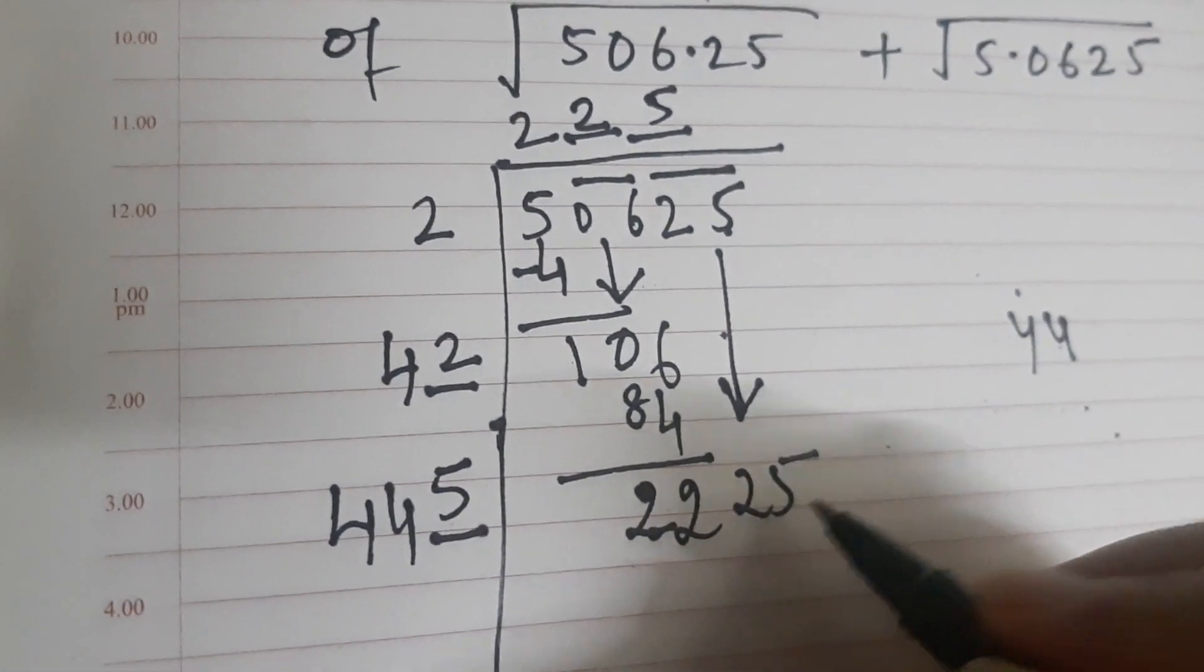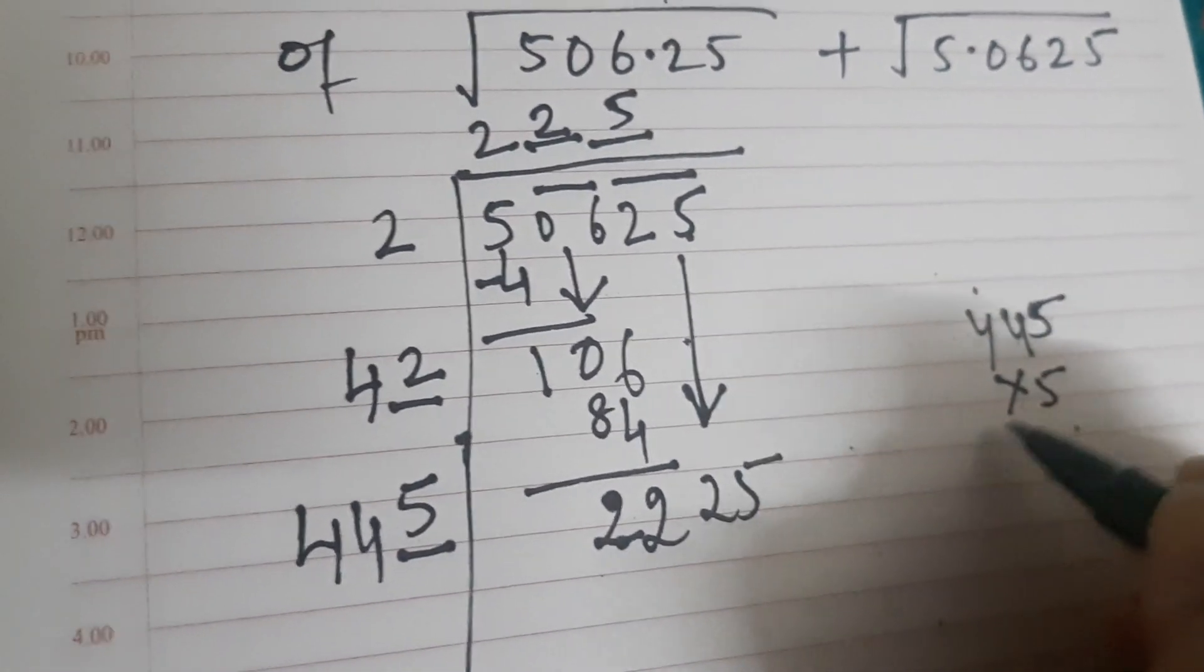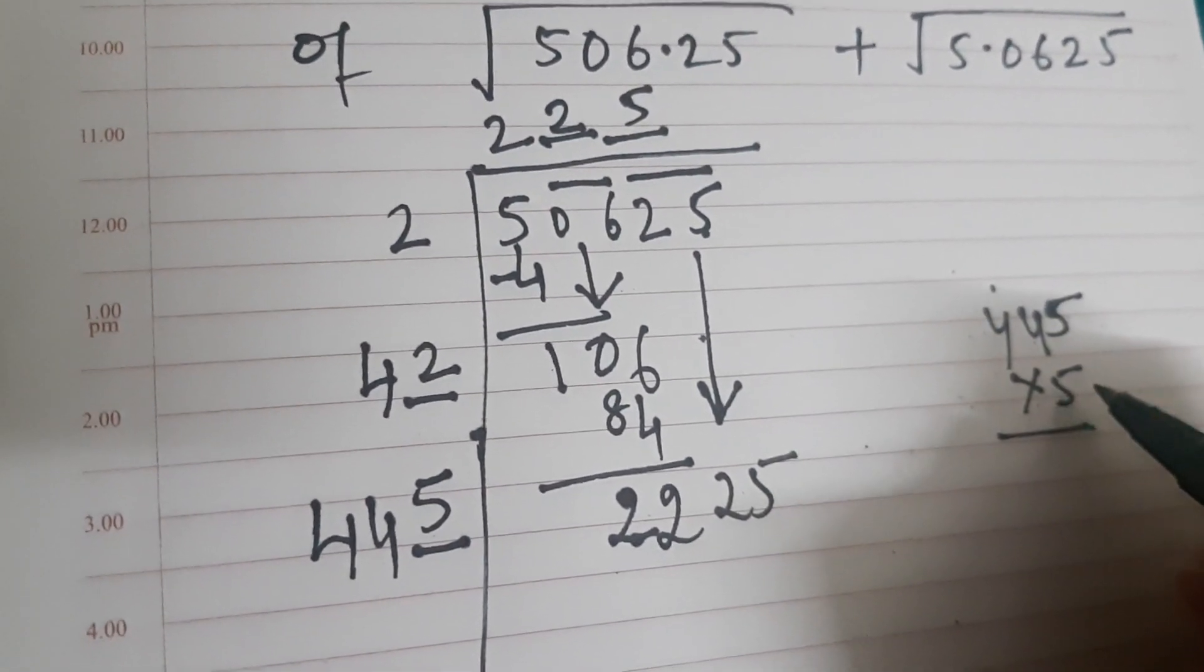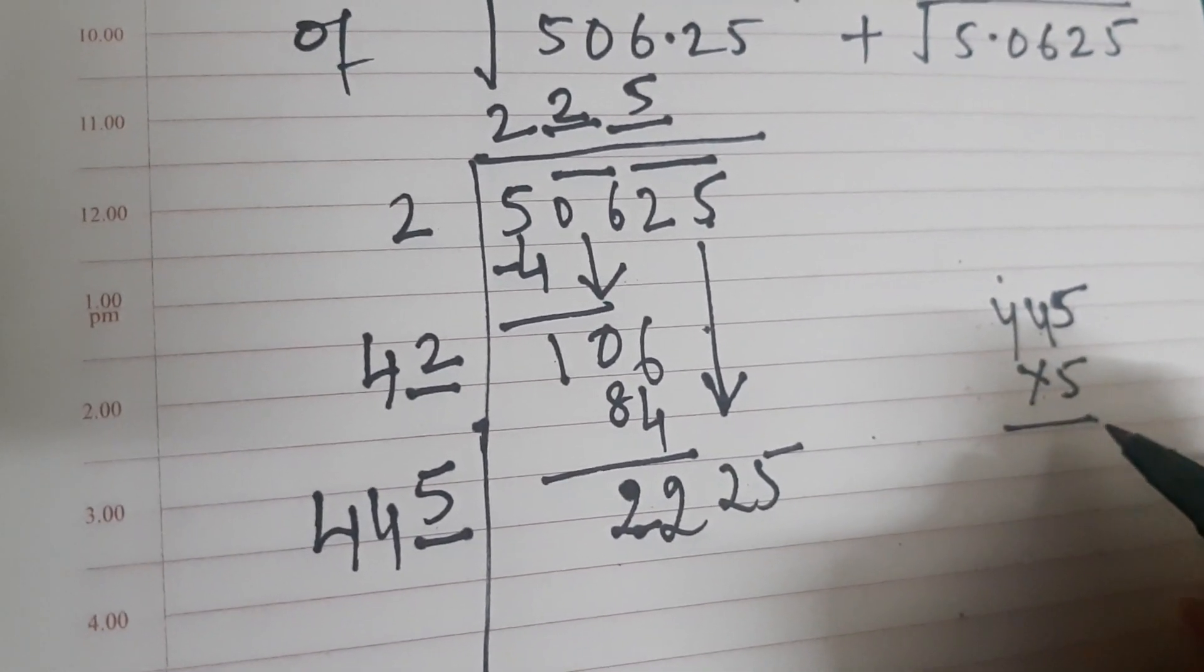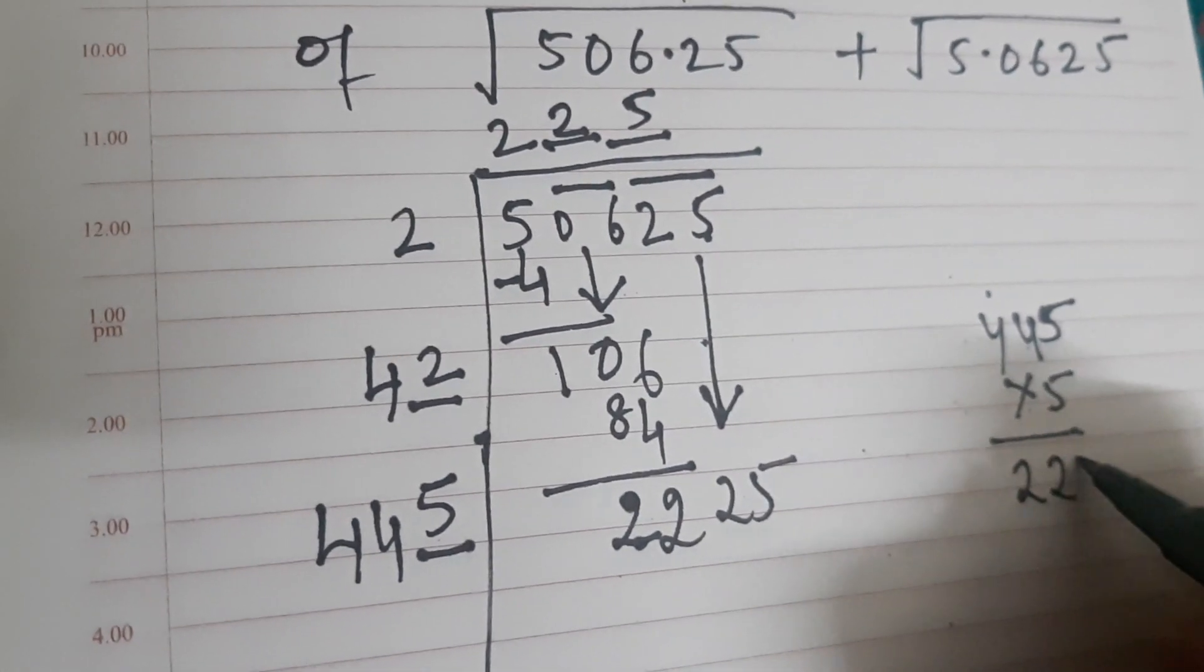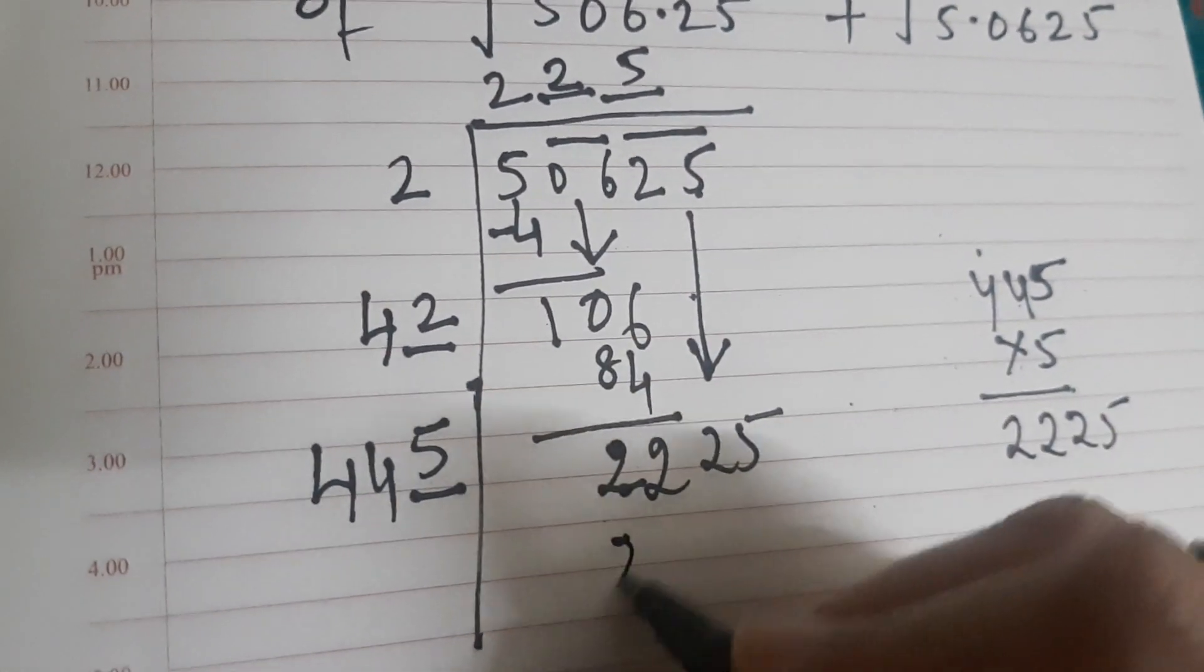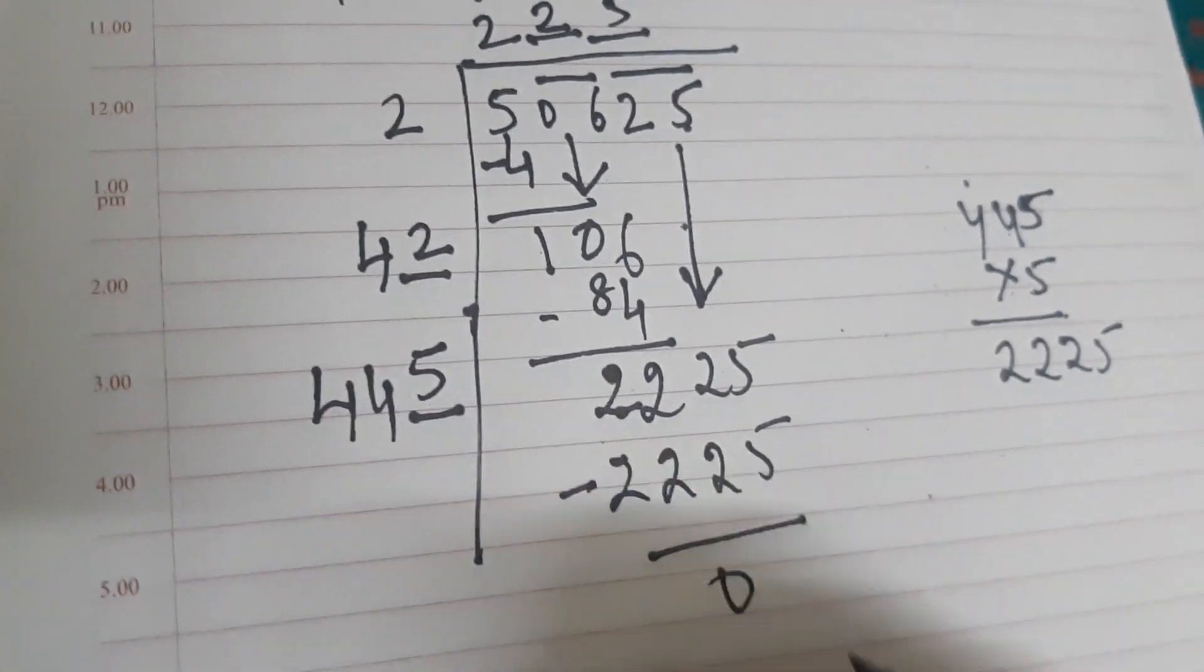So if we multiply 445 by 5, let us see what we get. Because you see at the end I have 5, so I am just guessing it. So let me see, 445 multiply by 5, okay it is coming out to be 2225, perfectly fine. Subtract it, so you get 0.